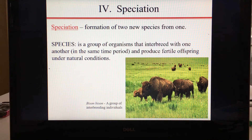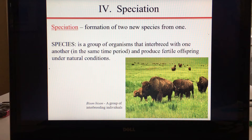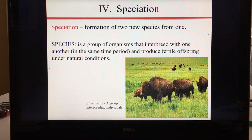A species is a group of organisms that interbreed with one another in the same time period and produce fertile offspring under natural conditions. It's not enough to bring those organisms into a laboratory and get them to breed — they have to do so on their own and their offspring have to be fertile. For example, you can mate horses and donkeys and get mules, but mules are sterile, meaning they cannot produce offspring. You cannot mate a mule with a mule and make more mules, so you would not consider horses and donkeys the same species.